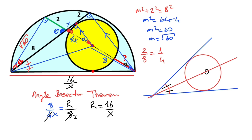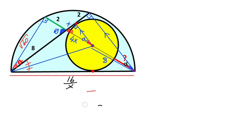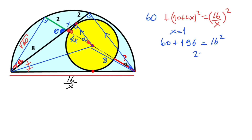If you focus on the biggest triangle, we can apply the Pythagorean theorem: root 60 whole squared plus (10 plus 4X) whole squared equals (16 over X) whole squared. Root 60 squared equals 60. Notice that X must equal 1. Let's verify: 60 plus 196 equals 256, and 16 squared equals 256. Yes, 256 equals 256, so X equals 1 unit.